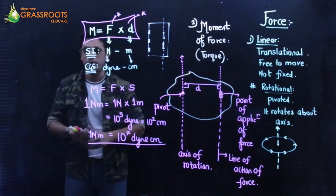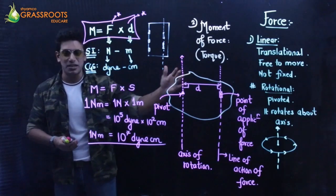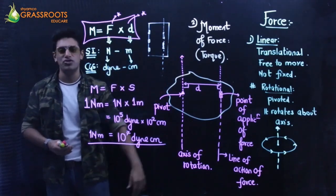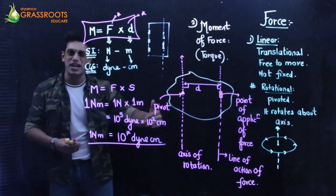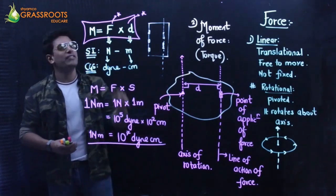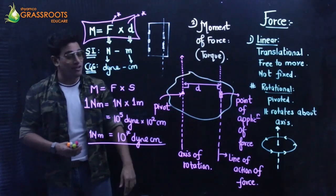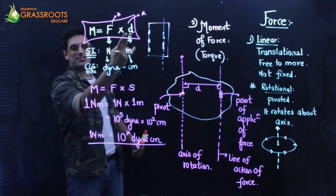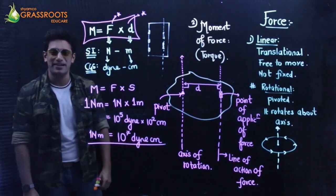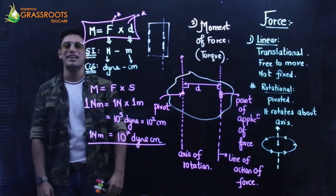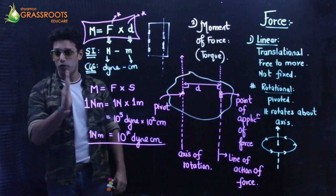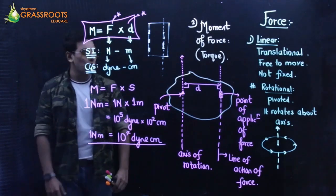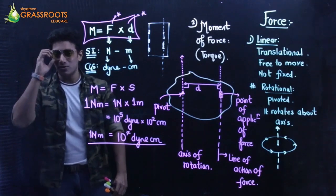So this was about the factors affecting moment. We studied linear translational motion, the moment of force, its SI unit, CGS unit, their relationship, and the factors affecting moment of force. More the distance, less is the force applied — inverse proportionality. That's why the line of action of force and the axis of rotation should be far from each other.